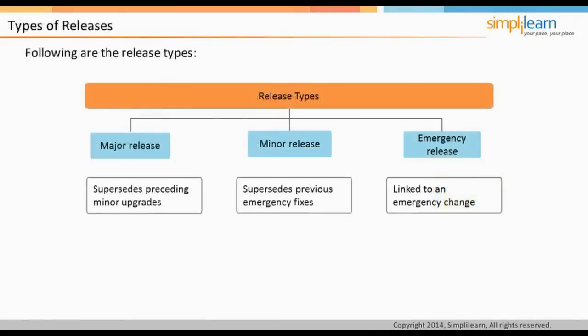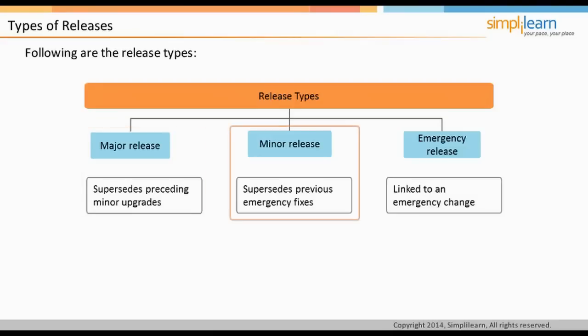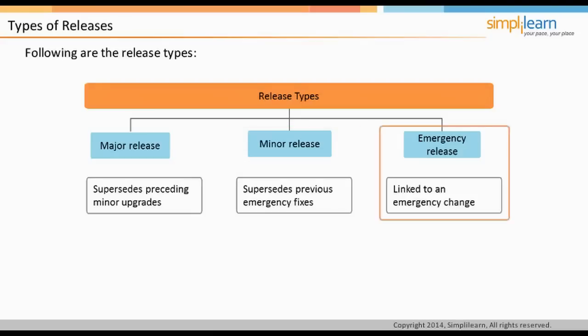The three types of releases are major release, minor release, and emergency release. A major release contains large proportions of new functionalities and supersedes any preceding minor upgrade — for example, Windows service packs. A minor release contains small enhancements and fixes and supersedes previous emergency fixes — for example, upgrading routers with the latest versions. An emergency release is linked to an emergency change — for example, Microsoft releasing an emergency patch to protect Windows from malicious attacks.